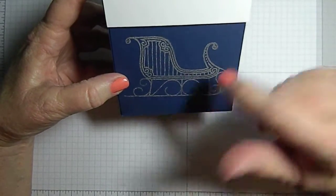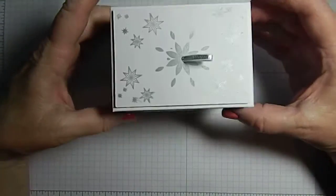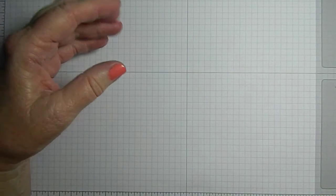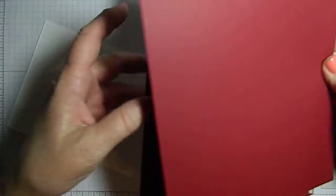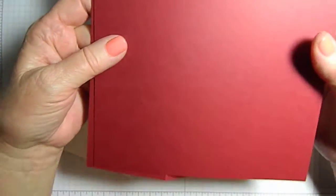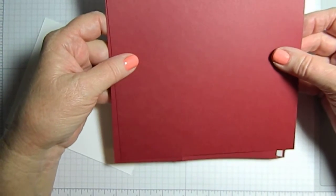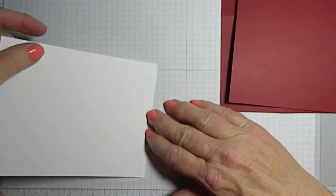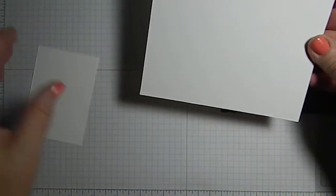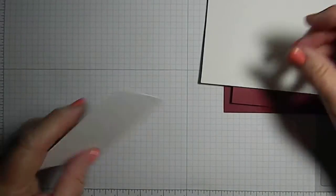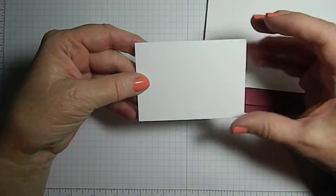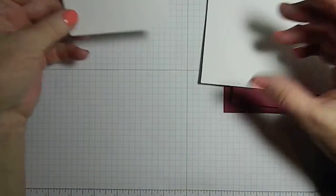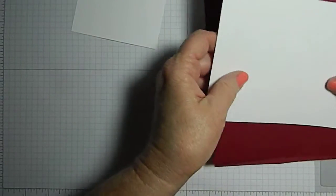So let's get started. You're going to need cardstock: two pieces that measure seven and three-fourths by seven. For the lid you want four and three-fourths by five and seven-eighths, and then the lid topper you want three and three-quarters by two and five-eighths.